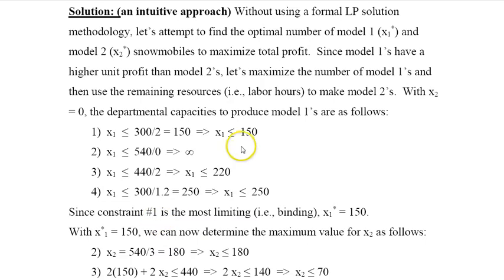If I look at these, constraint one is the most limiting, so it's the binding constraint, and I cannot exceed 150. So if I produce 220, the first department's availability of hours will be violated. The maximum I can produce is 150.